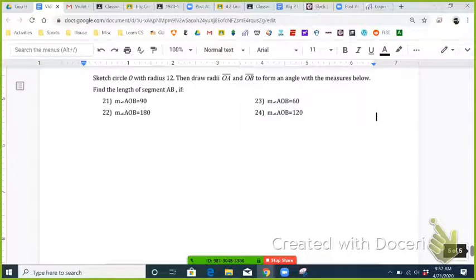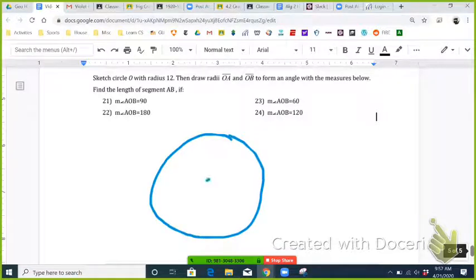So we have a circle with radius 12. Let's sketch circle O, and it says draw radii OA and OB to form an angle with a measurable O.